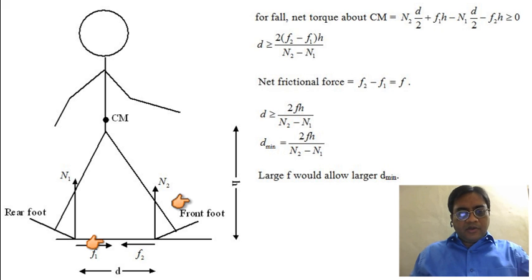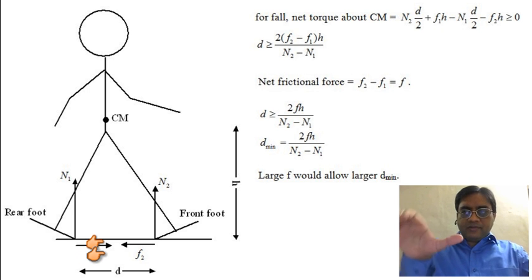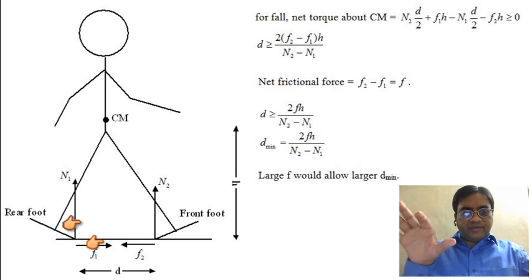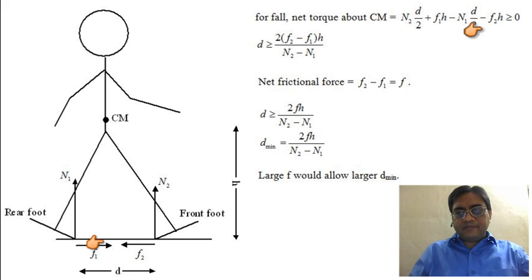Now, torque due to N2 and F1 are trying to turn in anti-clockwise sense. So, F2 and N1, same sign, N2 and F1, same signs.